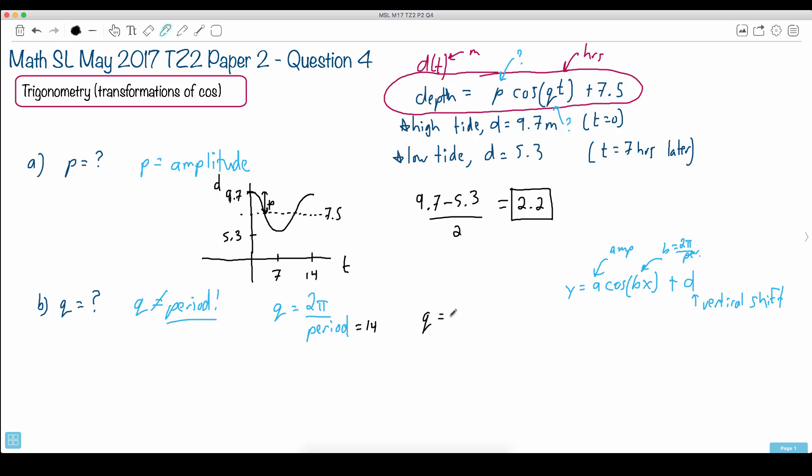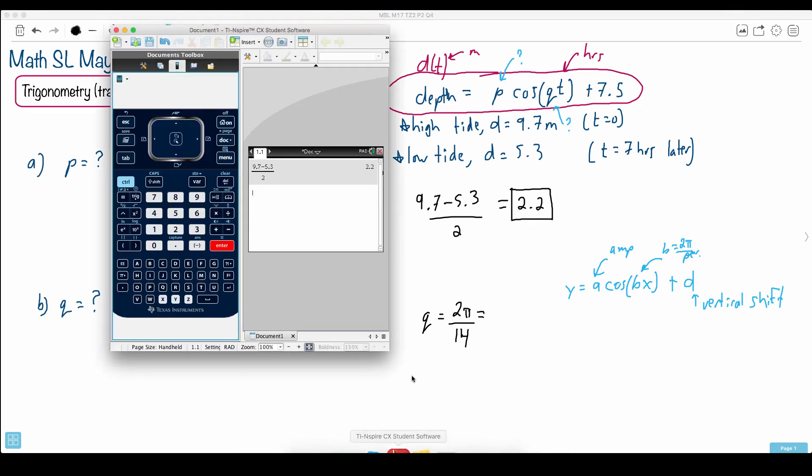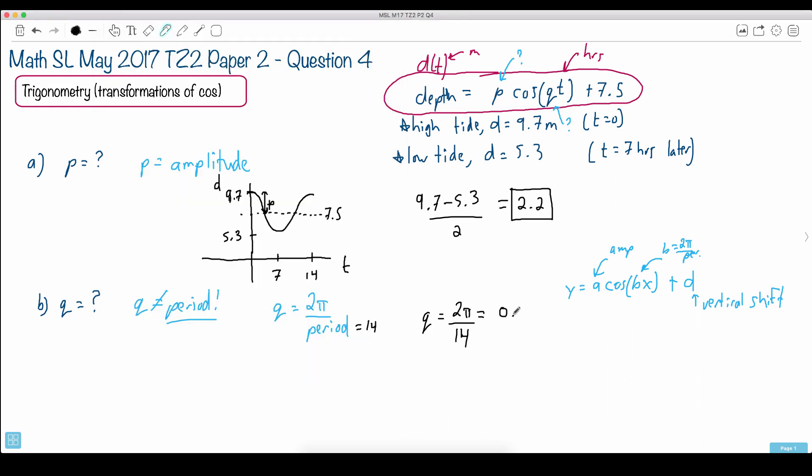Therefore, we could say that Q is equal to 2π over 14. We just do this on a trusty old calculator here. So I can do a fraction. I'll say 2 times π, and I have to find the π button, which is right here. I say enter, and I put the bottom of it. I make it 14, and enter. I get 0.448799. And think how many significant figures? Always 3 if you're not otherwise told. So 0.449 will be my answer here. That's Q.